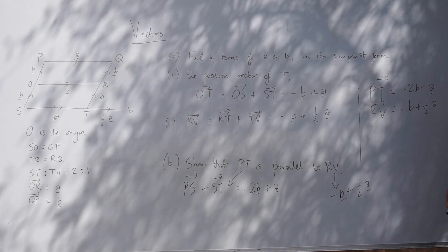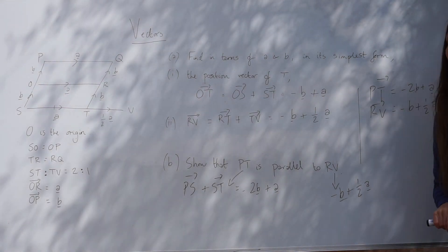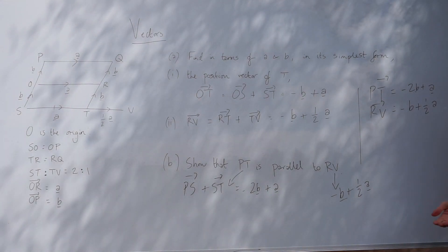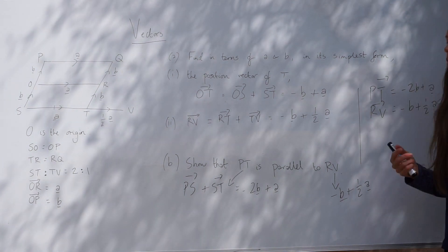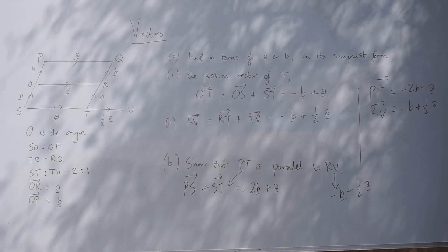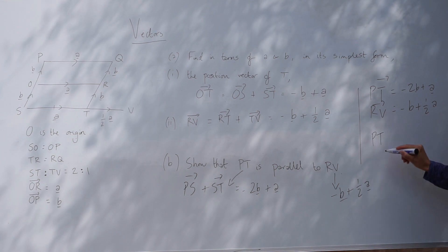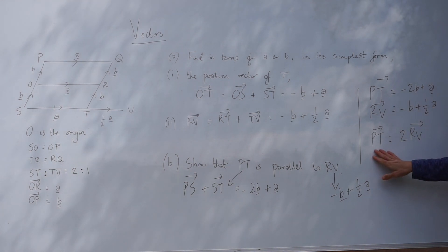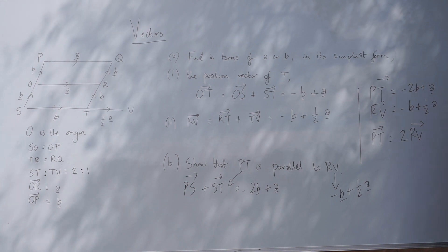So they're not necessarily the same length. These are not the same length, but they're in the same direction. So we've proved that the lines are parallel to each other. What you can also do, just to finish up the answer here, you could say PT is equal to 2 lots of RV, just to show that this is a multiple of RV. And that's all you need to write down.